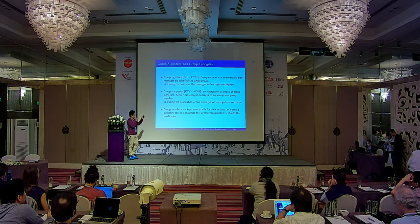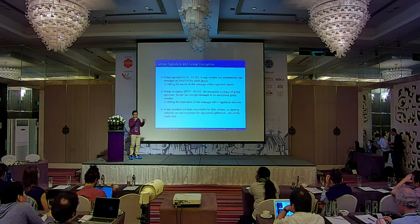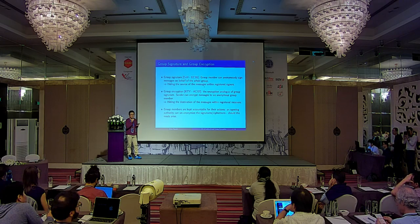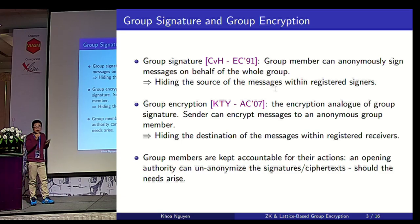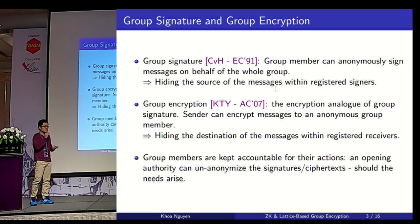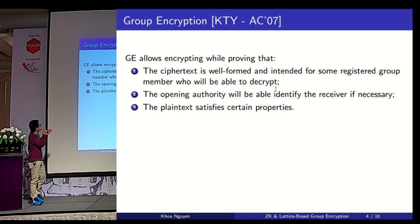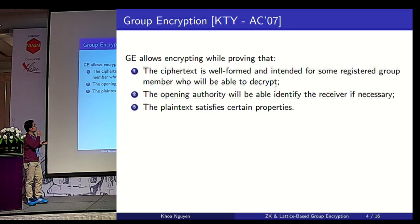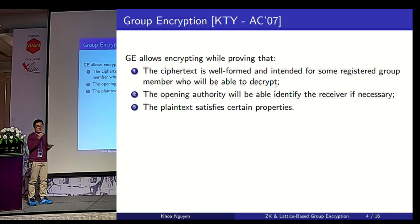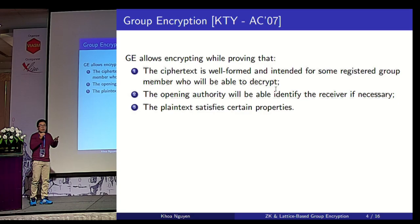Another interesting feature of both group signatures and group encryption is that users are kept accountable for their actions. In case of misbehavior, there is a tracing authority and opening authority who has some secret key and who can identify the signer of the message or the receiver of the ciphertext. More formally, a group encryption scheme allows encrypting while proving that the ciphertext is well-formed and intended for some registered group member who will be able to decrypt.